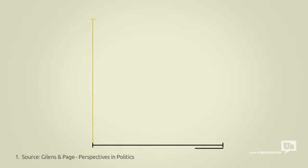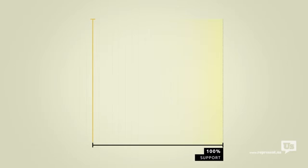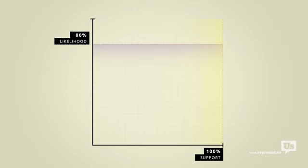This axis here represents public support for any given idea. On the left at zero percent are ideas that not a single American wants. On the right at 100% are ideas that everyone supports. This axis represents the likelihood of Congress passing a law that reflects any of these ideas, from a zero to a 100% chance.